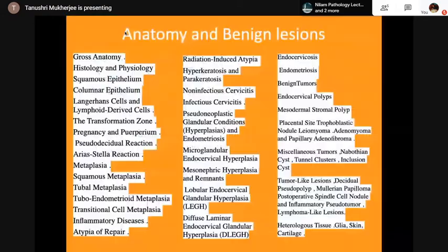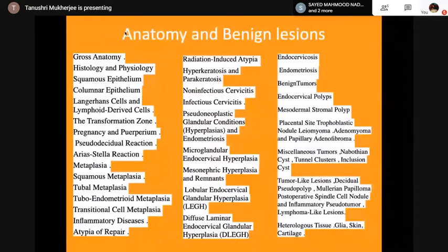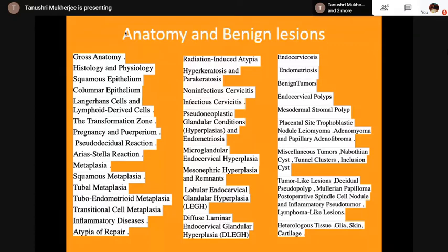The benign lesions are important because you have to differentiate them from the neoplastic. As we will see further, there are so many entities and there is so much overlap. So you have to be very, very careful. These are all the entities which are covered under the benign lesions.